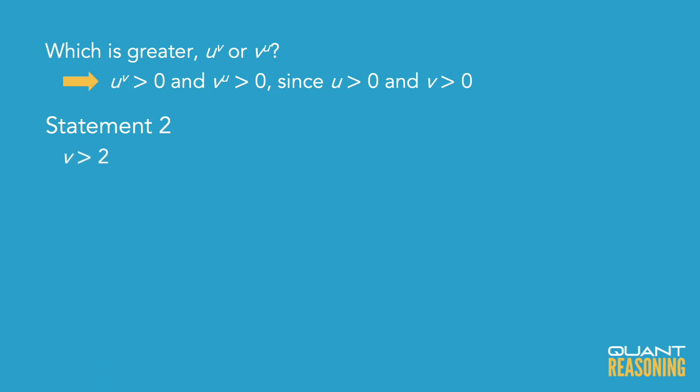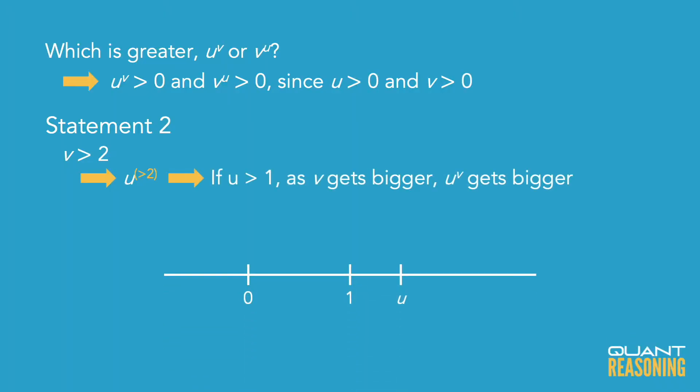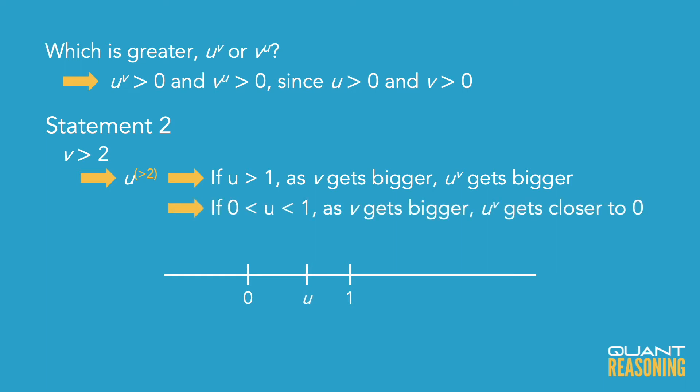Statement 2 tells us that v is greater than 2. So we have u to the power of v, which is u to the power of more than 2. I don't even know if that's bigger or less than u squared because I don't know whether u is to the right or left of 1 on the number line. If u is to the right of 1, then as v gets bigger, u to the power of v gets bigger. But if u is between 0 and 1, then as v gets bigger, u to the power of v gets closer to 0. So there's really not much we can say about u to the power of more than 2.